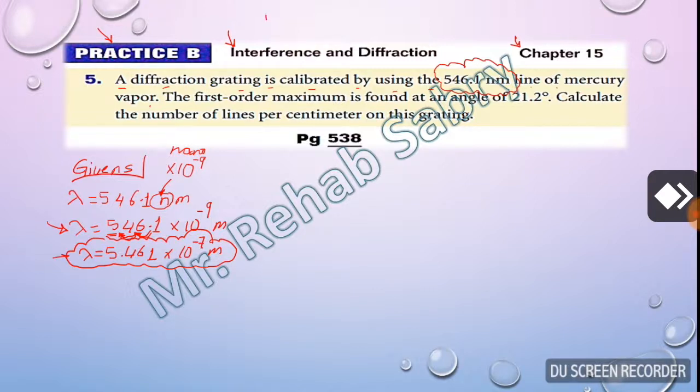Whenever you find nanometer you have to change it to meter by multiplying times 10 to the power of negative 9. Whenever you find micrometer, which is mu, not capital M because capital M means mega, you have to change it to meter by multiplying times 10 to the power of negative 6.